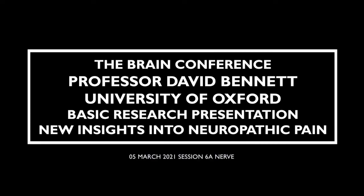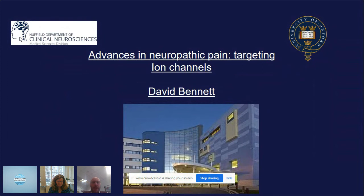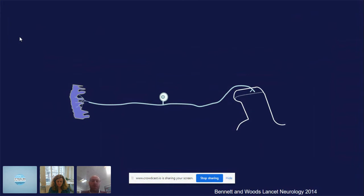Thank you very much for the introduction Mary, and thank you for the invitation to talk today. I'm going to discuss neuropathic pain, with an emphasis on the role of ion channels in neuropathy. I'll be somewhat continuing the theme of inherited changes, because much of that will relate to genetics and variants in those ion channels that may ultimately inform treatment. We've seen a nice convergence between human genetics and our understanding of how central neurons and particularly nociceptors, which detect tissue injury, work.